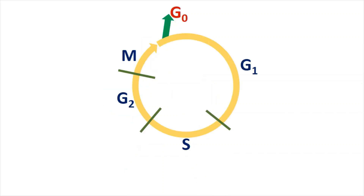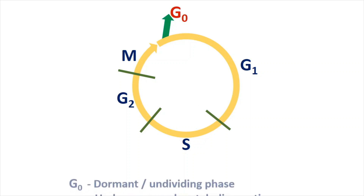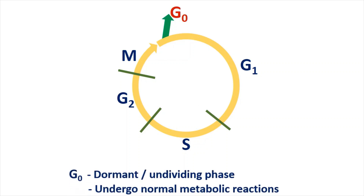In this diagram you can see that after mitosis the cell can either re-enter the G1 phase — starting a new cell cycle — or enter the G0 phase. The G0 phase is known as the dormant or undividing phase, meaning the cell does not divide and is at a resting state. Most cells in the human body are at this G0 phase, and in this phase the cell undergoes normal metabolic reactions like respiration and excretion.